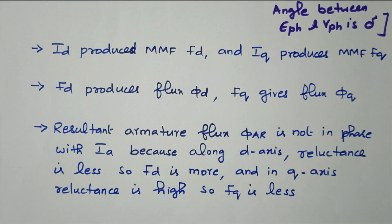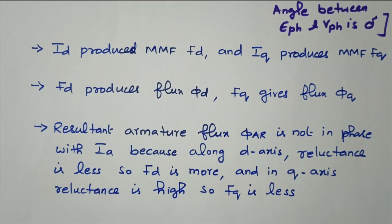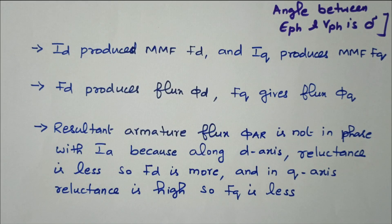In this video we discussed the two reaction theory of a salient pole alternator. Because of variation in the reluctance of the salient pole machine, we discussed two axes: direct axis and quadrature axis. In the direct axis we have low reluctance, and in the Q-axis we have high reluctance. Subscribe this channel for more videos and notifications. Soft copy of this material is available in the drive; the link is given in the description box. Thank you for listening, and all the best for your examination.